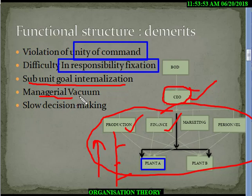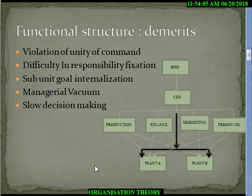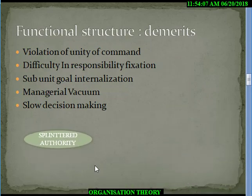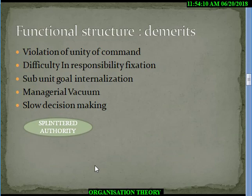So a managerial vacuum is created — a succession problem. There is also slow decision making because working here requires authorization from multiple places, which may be a problem in decision making.